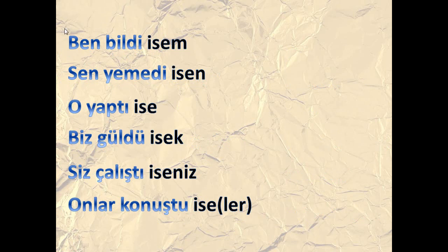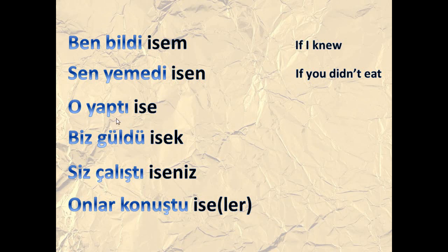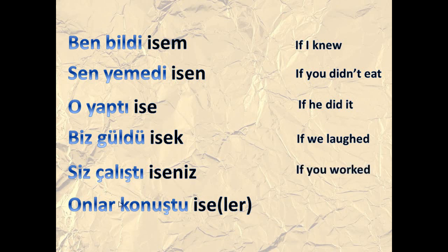Next, ben bildi isam means 'if I knew,' or 'if I happen to know.' Sen yemedi isan means 'if you didn't eat.' O yaptı ise means 'if he did.' Biz güldü isek means 'if we laughed.' Siz çalıştı iseniz means 'if you worked.' Onlar konuştu ise, or konuştularsa, or konuştular ise means 'if they talked.' Here I have used the third person simple past form, and this is for past time.